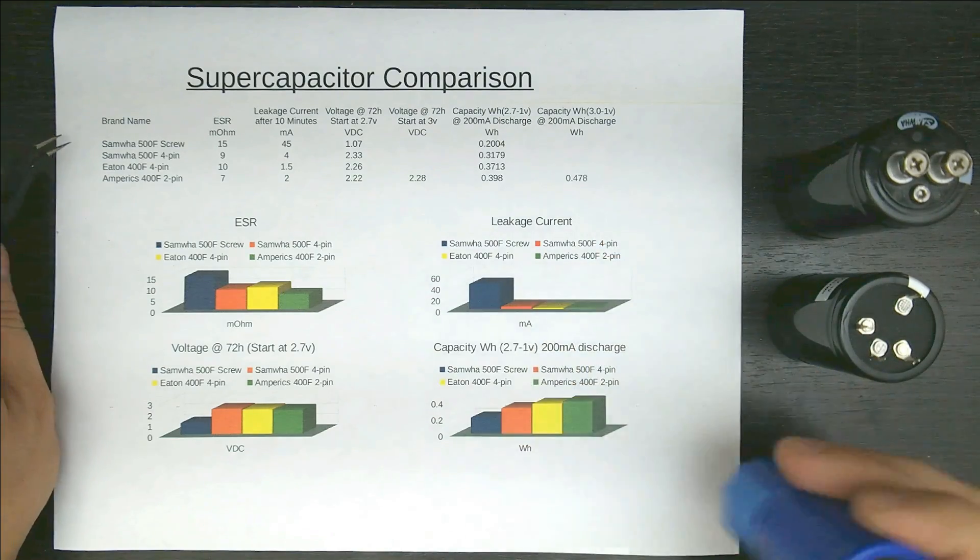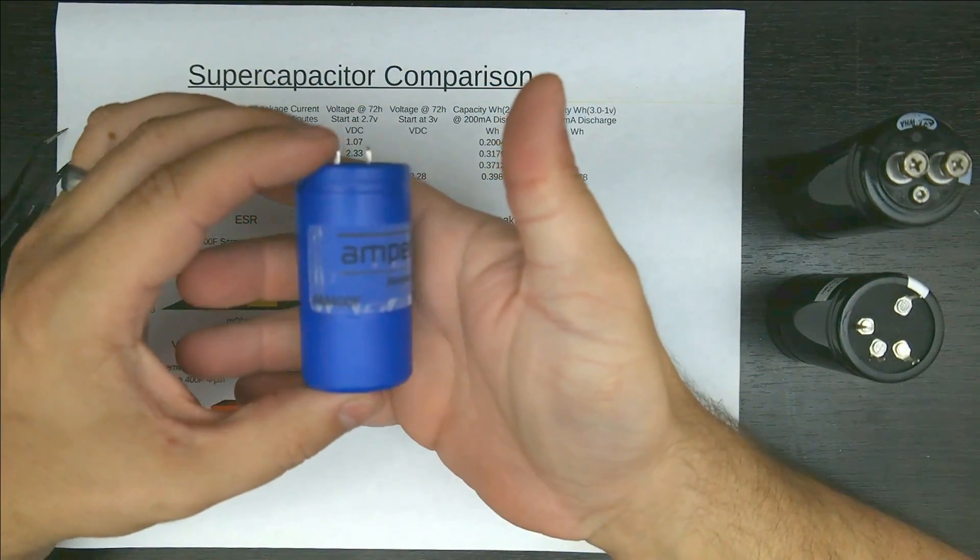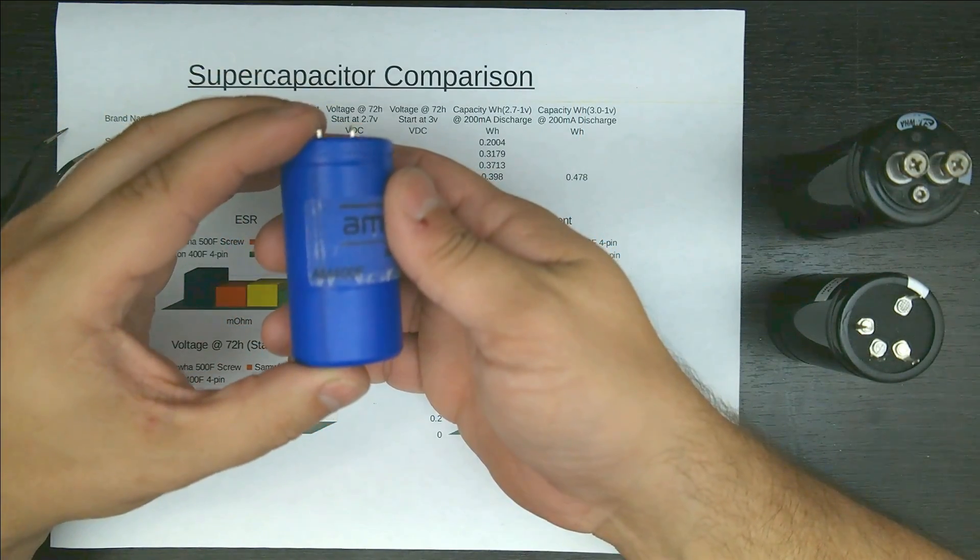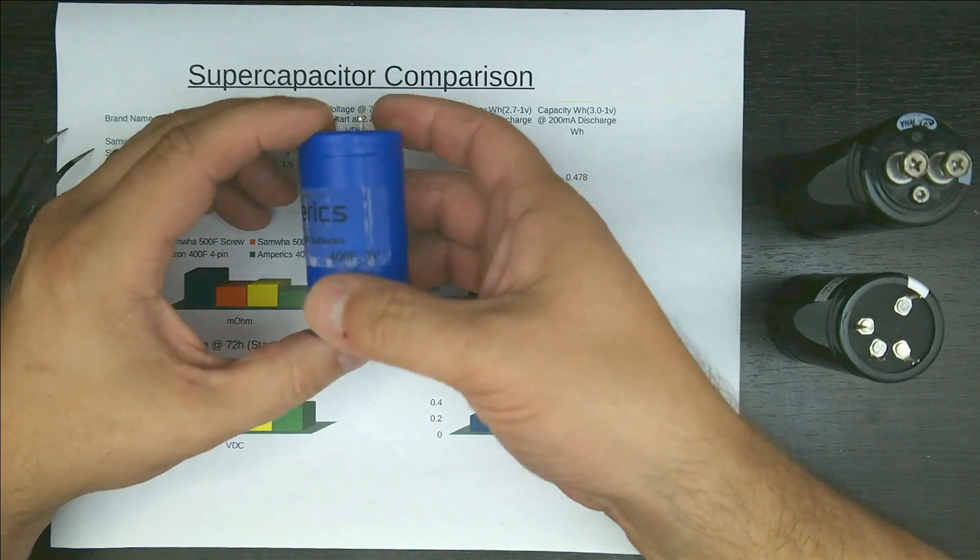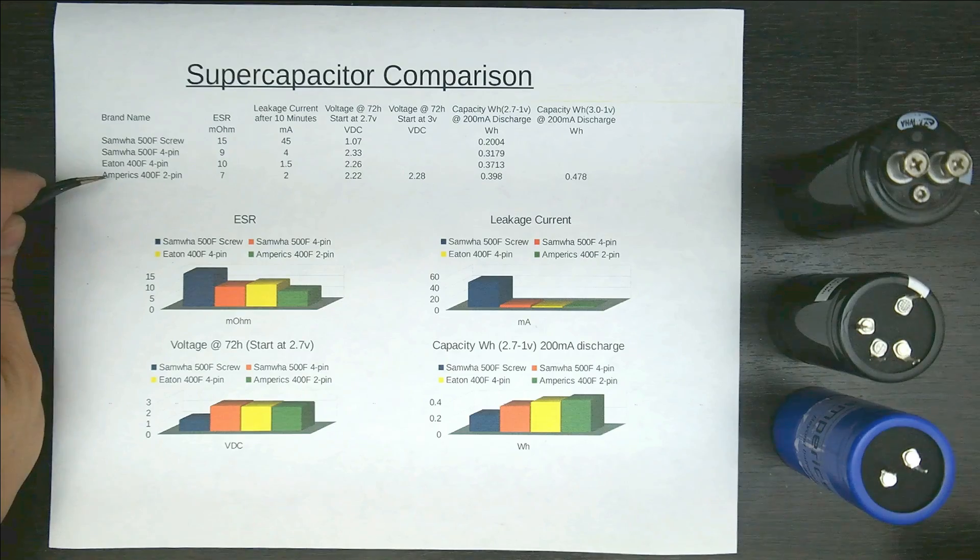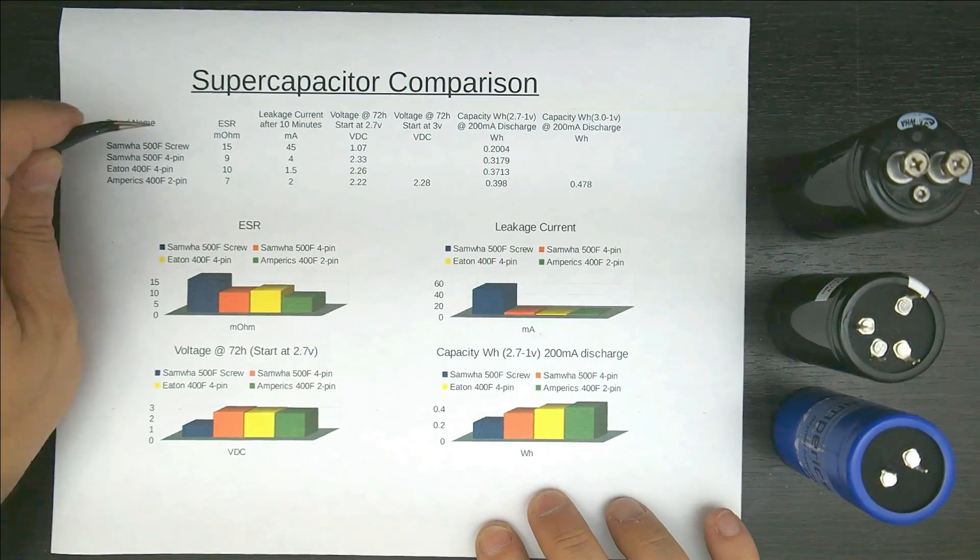And here's a, let me get one without tape on it. Here's what they look like a little closer. Amperics, Beyond Batteries, AM400F, that's the model I'm using, and 400 Farad 3-volt. Two pins, that's all there is to it. So they are on the last column here, Amperics 400 Farad 2-pin.